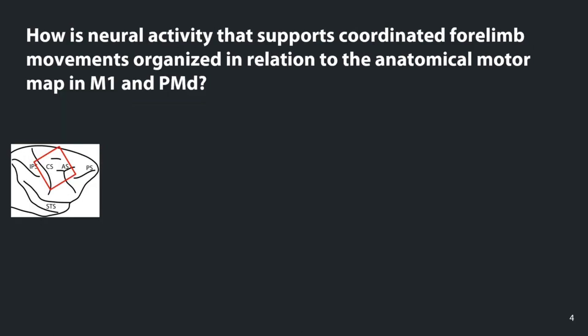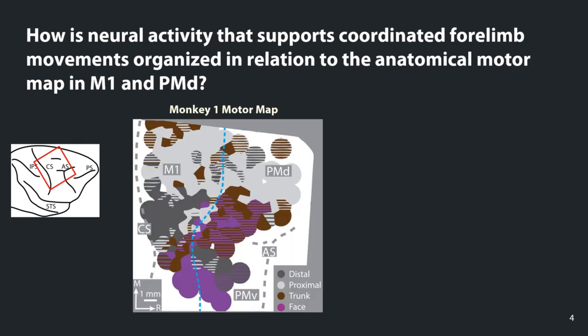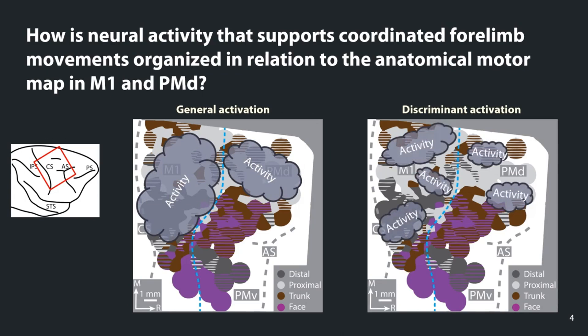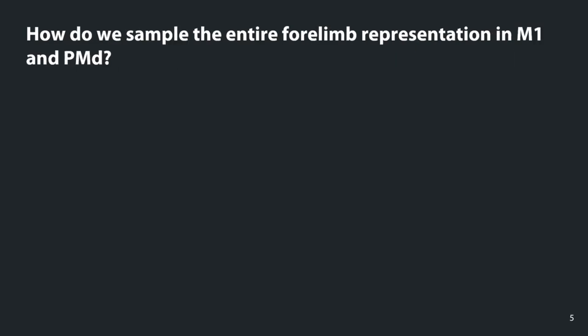The question we want to ask for this project is: how is neural activity that supports coordinated forelimb movements organized in relation to the anatomical motor map in M1 and PMD? Here is Monkey 1's motor map with the distal forelimb or hand representation in the dark gray pixels, and the proximal forelimb or arm representation in the light gray pixels. We could see general activation of both M1 and PMD, or we might get discriminant activation where certain domains are activated and not the entire region.